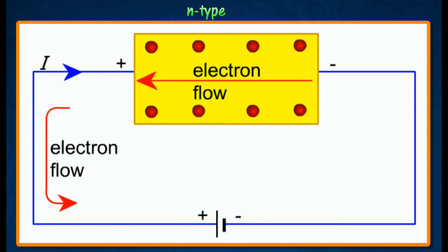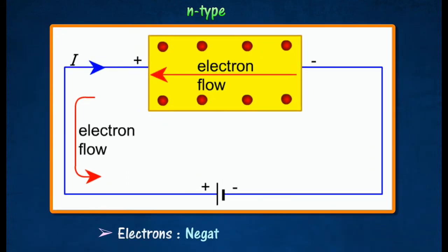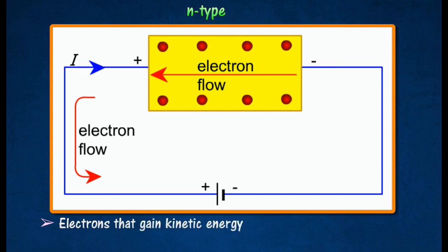In N-type semiconductor, free electrons are the negative charge carriers. Free electrons that gain kinetic energy move to the positive terminal of the battery.